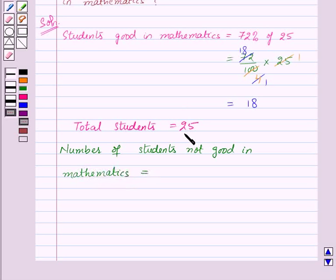We have total students, 25, minus students good in mathematics, 18, which equals 7. Therefore,